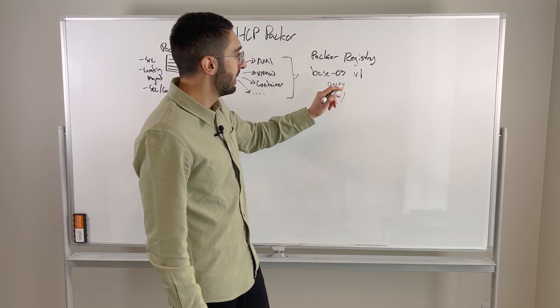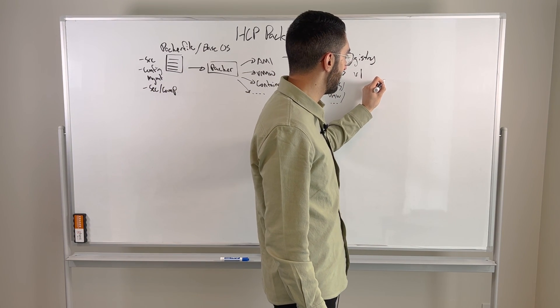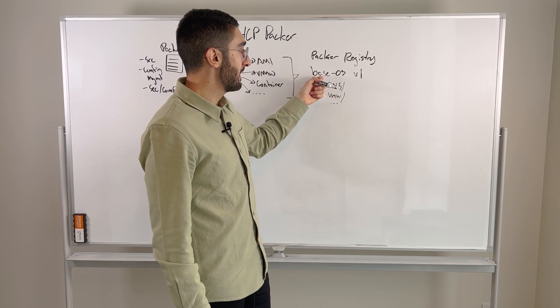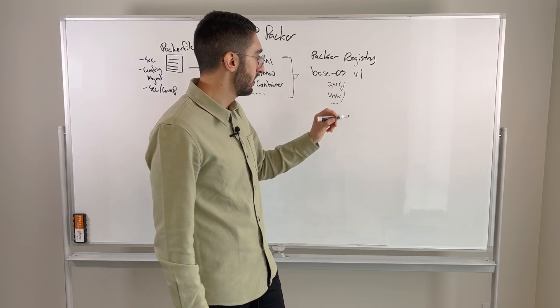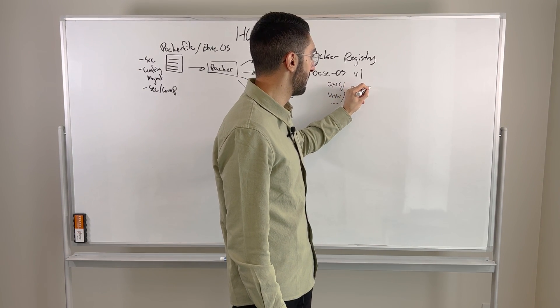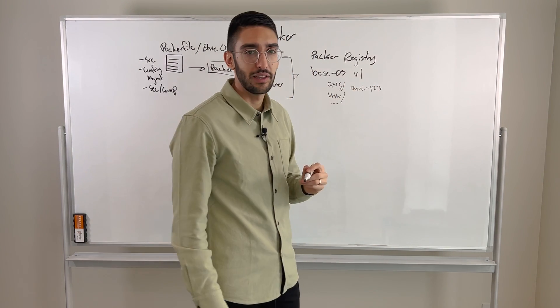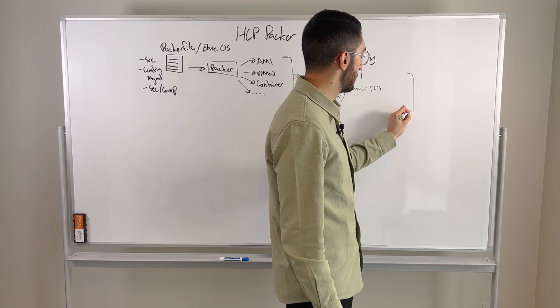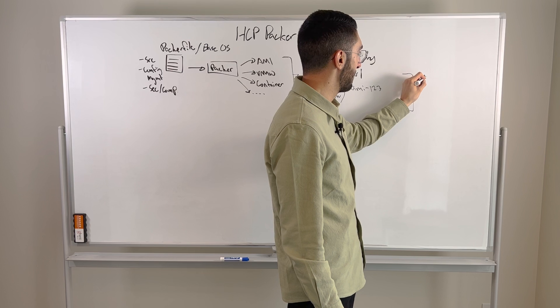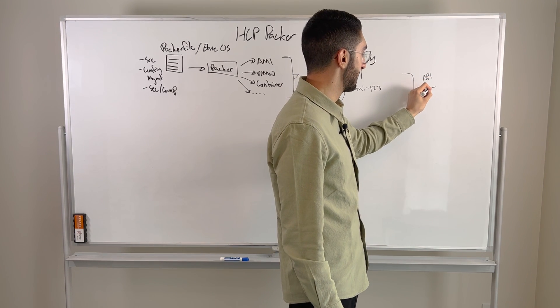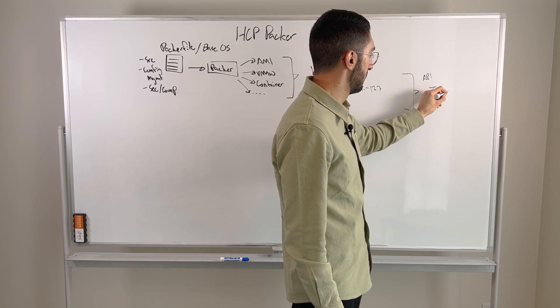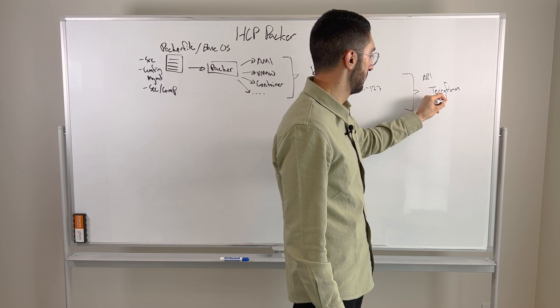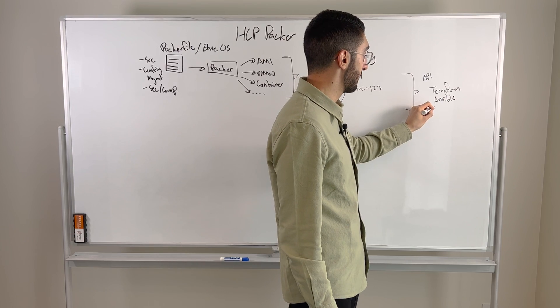And what this now enables is that we can query this via an API and say, give me the latest version of my base OS for AWS in this case. In which case, what we're going to get back is a particular AMI ID. AMI 123, let's just say. And so you can start to see how this can be fed in via an API to many different downstream systems like Terraform. You might consume this as part of an Ansible script. You might consume it as part of a different Packer run.